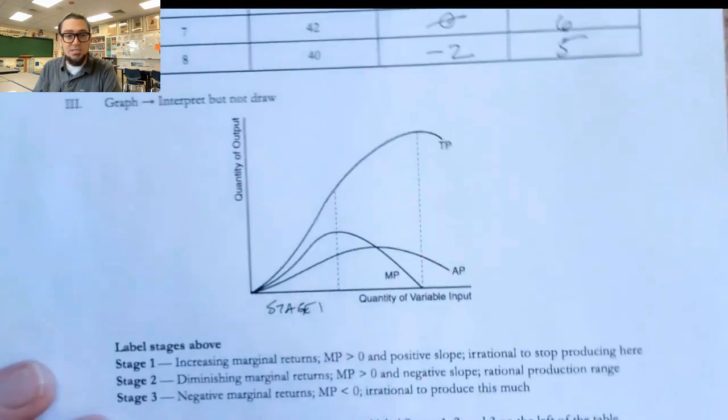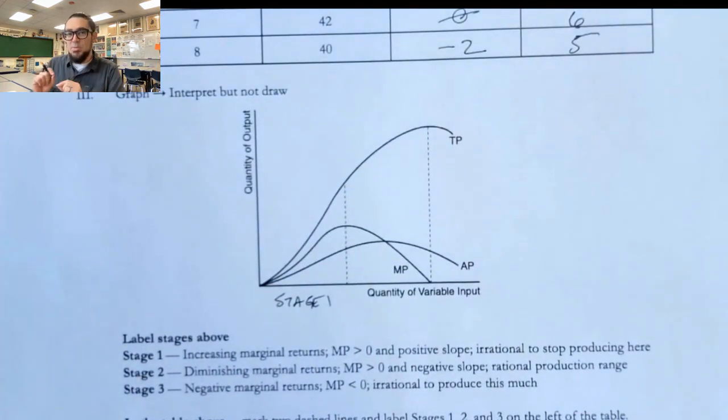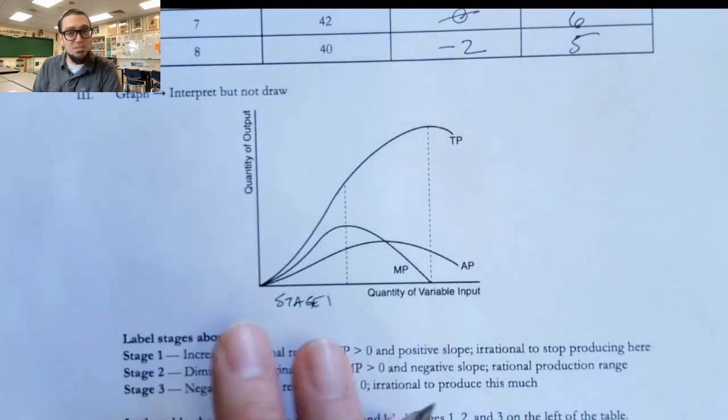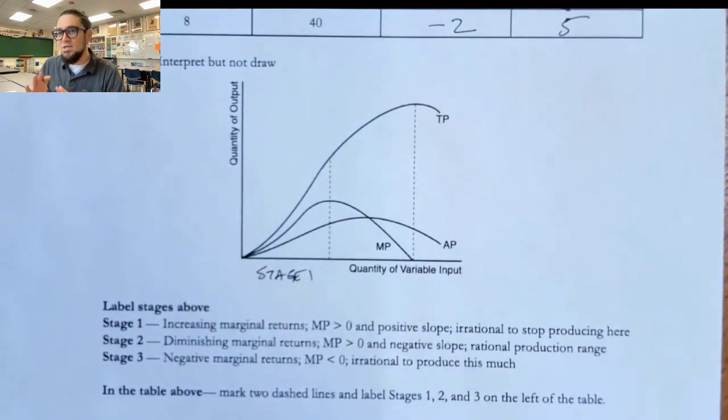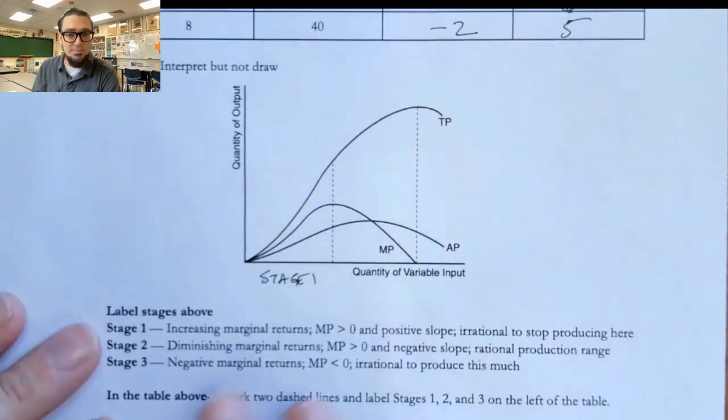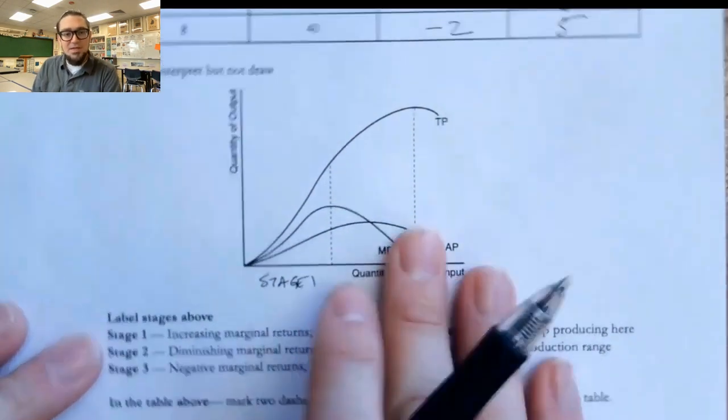Stage two is what we call diminishing marginal returns. This happens because you're continually adding more and more variable inputs. You have a fixed amount of the other types of inputs. In other words, you could keep hiring more and more waiters for your restaurant, but at a certain point, there's not enough tables, there's not enough ovens, the kitchen is too small. So you're not going to get as much marginal product out of each one of those additional waiters and cooks that you hire. And so the marginal product of each additional one starts to fall.